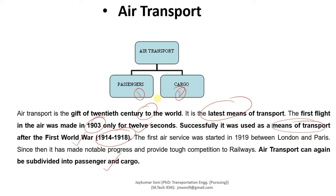This was all about the means of transport. Land transport can be divided into pathways, roadways, trams, and railways. Water transport can be divided into inland waterways and ocean waterways. Air transportation can be divided into passenger and cargo. Thank you.